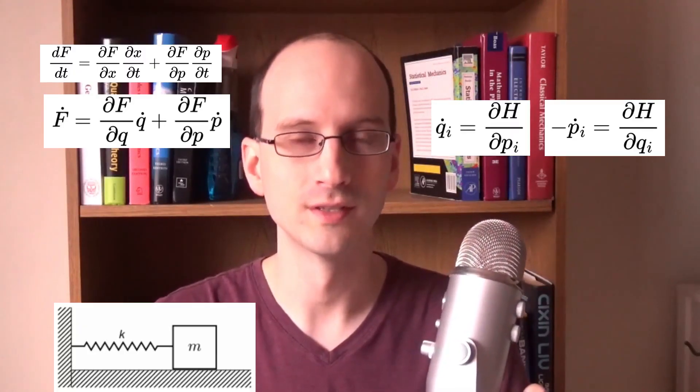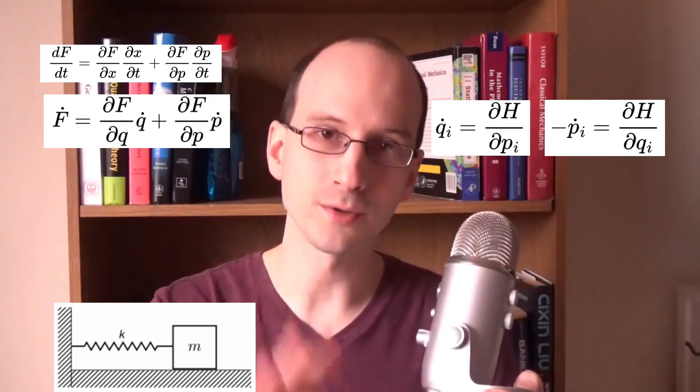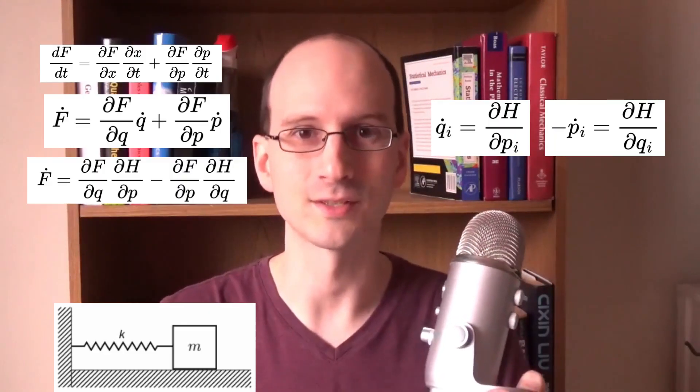X is our position variable. In general, position variables are written as Q. This could represent not only left, right, up, down, forward, backward, but maybe angle, maybe frequency, any number of things. Just in this particular example, it happens to be X. Now, where else have we seen Q dot and P dot? The Hamilton equations of motion. So let's substitute the other side of those equations into this equation.